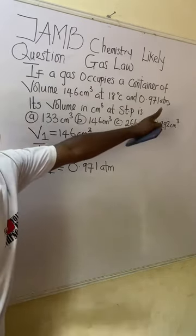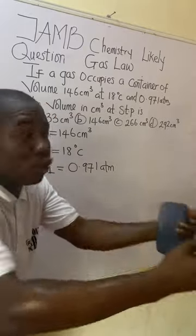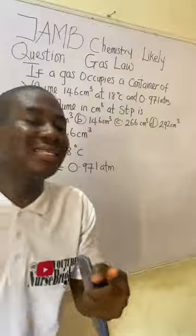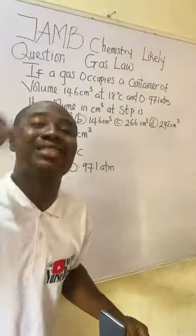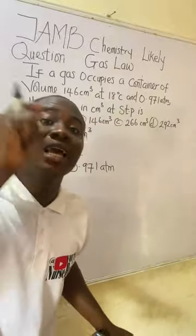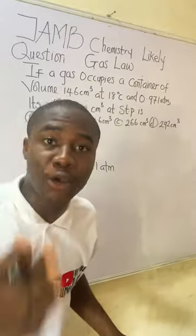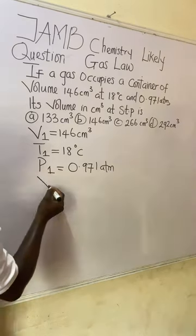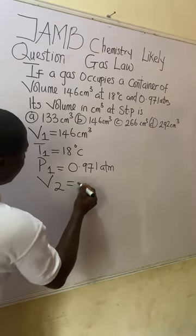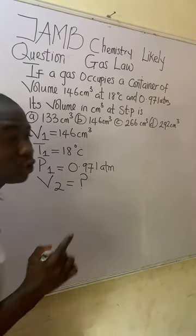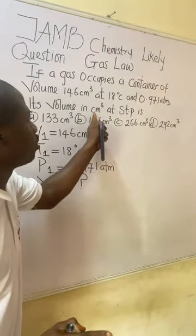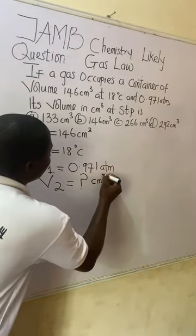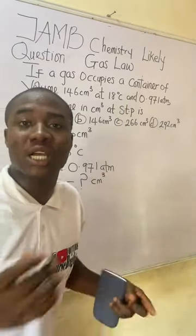The question then says 'its volume in cm³ at STP.' That means they are asking us to find a second volume, which we call V2. We are looking for V2 in centimeter cube.